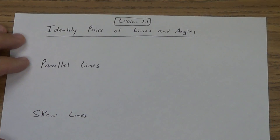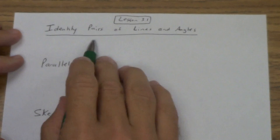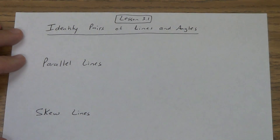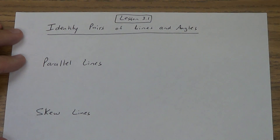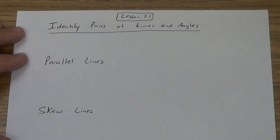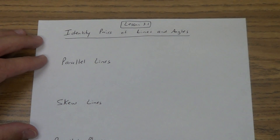All right, lesson 3.1 today. We're going to talk about different pairs of lines and some angles. So we're going to have a bunch of terms that you need to understand, and then we'll do a little bit of application of it. Let's start with parallel lines.